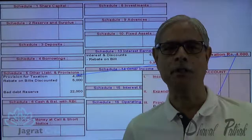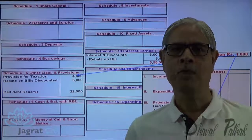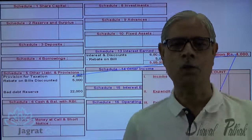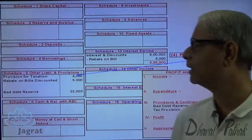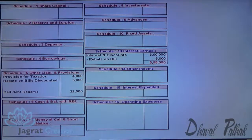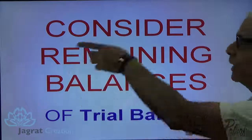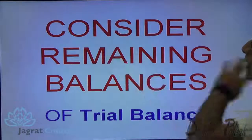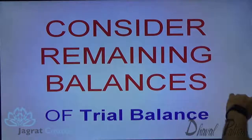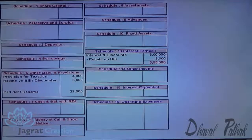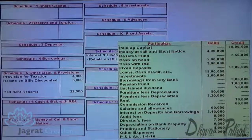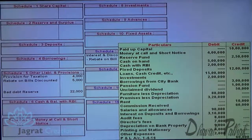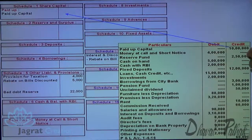Now I have considered all the adjustments given in the sum. Now I should start copying the balances given in the trial balance. After giving the effect of the adjustments, consider the remaining balances of the trial balance. Paid-up capital will go in the first schedule — share capital. Money at call and short notice is a short-term advance given by the bank, just for three days, five days, or one week at the most.